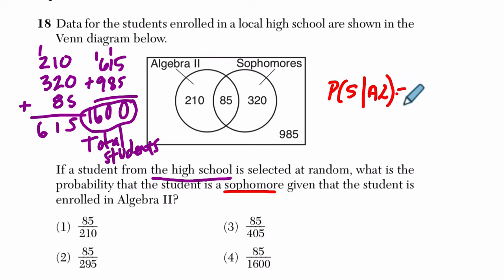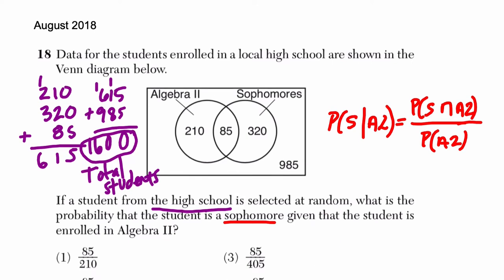So what will this equal? This is going to equal the probability that they are a sophomore and in algebra 2, divided by the probability that they are in algebra 2. Let's go back to the definition. I'm going to write it up here. It's a side note. The definition I'm thinking of in my mind is that the probability of B given A equals the probability of A and B,